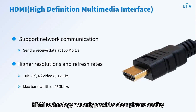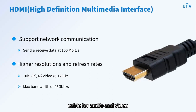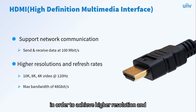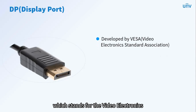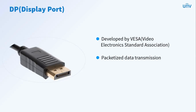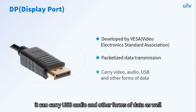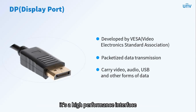For consumers, HDMI technology not only provides clear picture quality but also greatly simplifies system installation due to a single cable for audio and video. In order to achieve higher resolution and data transmission rate, there is also a digital display interface called DisplayPort. Developed by VESA — the Video Electronics Standards Association — and debuted in 2006, it uses packets instead of a clocking signaling scheme to transmit data. The DisplayPort was primarily used to connect a video source to a display device such as a computer monitor. It can carry USB, audio, and other forms of data, with audio and video transmitted simultaneously. It was designed to replace the older VGA and DVI interfaces.